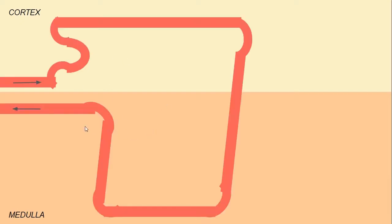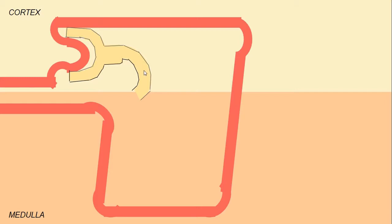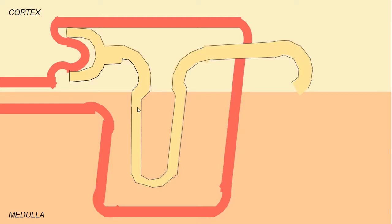We have the tubule, which begins with the Bowman's capsule, then the proximal convoluted tubule, the descending limb of the loop of Henle, the ascending limb of the loop of Henle, the distal convoluted tubule, and the collecting ducts. Those are all the anatomical components within a nephron.